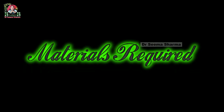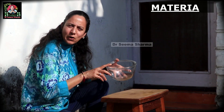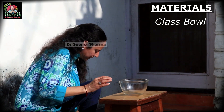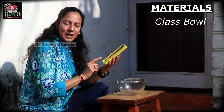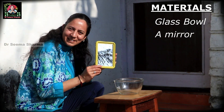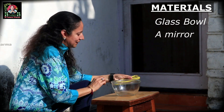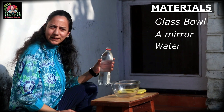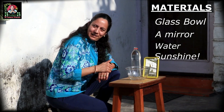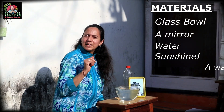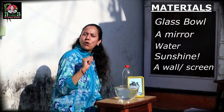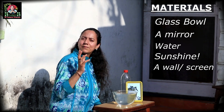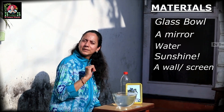Materials required: we need a glass ball, we need one mirror, some water, a lot of sunlight, and we also need one wall or screen or some surface for the reflected light to fall upon.